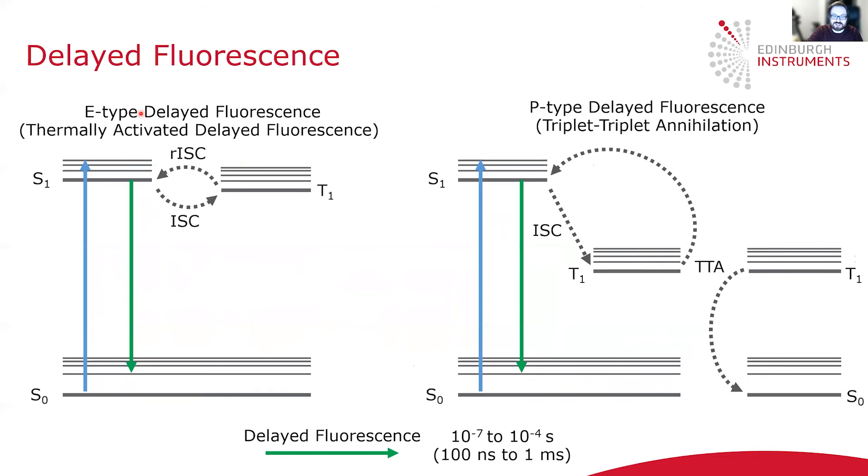On the left here is E-type delayed fluorescence, which is more commonly known now as thermally activated delayed fluorescence, particularly in the OLED research community.